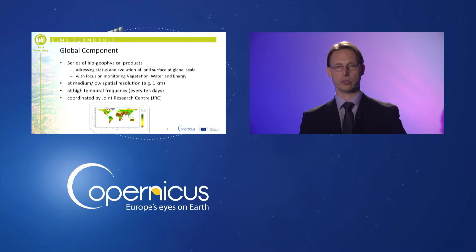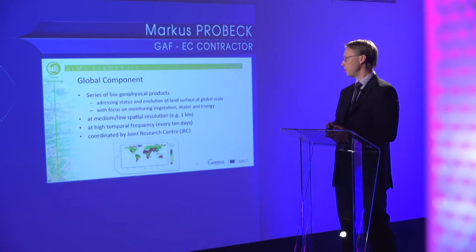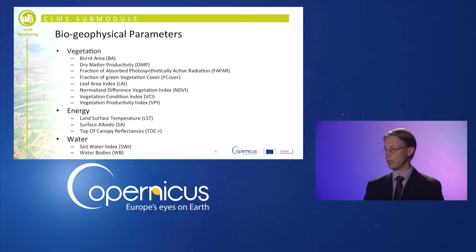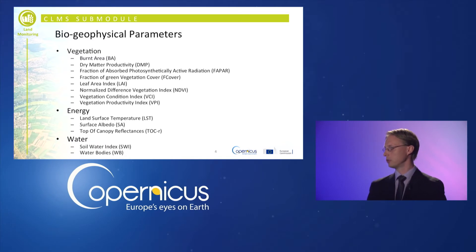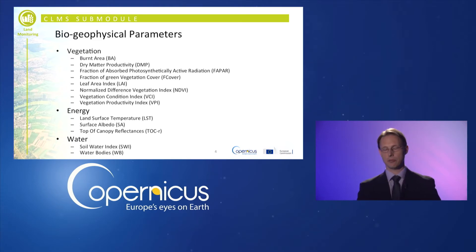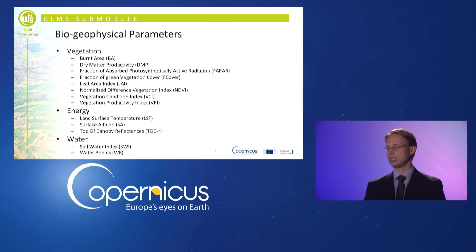In turn, the global component has a very high temporal resolution — typically every 10 days a product is made available to the public. The global component is coordinated by the European Commission's Joint Research Centre. The vegetation-related products include burnt area mapping, dry matter productivity, the fraction of absorbed photosynthetically active radiation (FAPAR), the fraction of green vegetation cover, the leaf area index (a measure of density of green plants), the normalized difference vegetation index (NDVI), and vegetation condition and productivity indices.